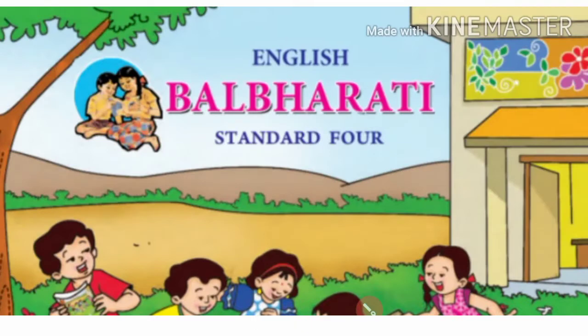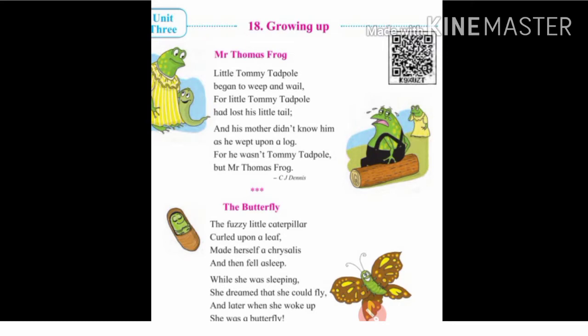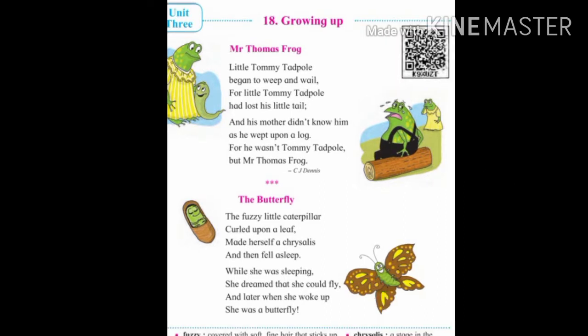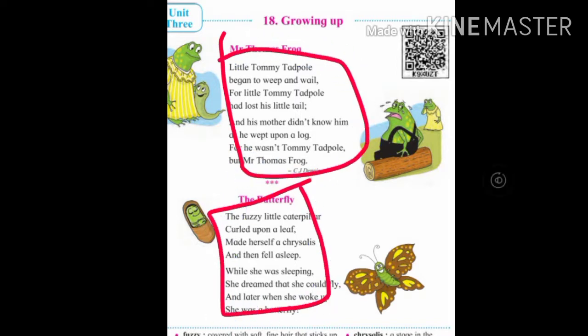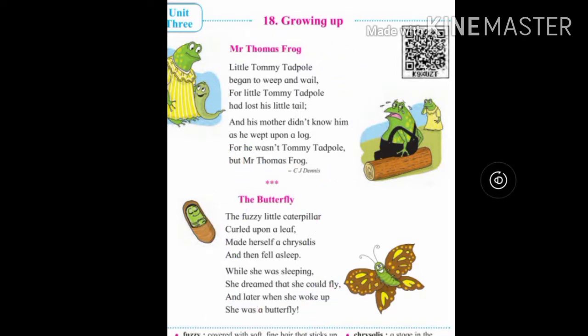Hello students, welcome to this channel. Now we are going to see our next topic of English Balbharti Standard 4, Unit 3, poem 18 'Growing Up.' As you can see, it has two parts: Part One is 'Mr. Thomas Frog' and Part Two is 'The Butterfly.' Let's read both parts together.